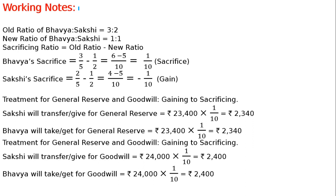The question is: Bhavya and Sakhi are partners in a firm sharing profits and losses in the ratio of 3 to 2. On 31st March of the current year, their balance sheet was given. On the liability side: Investment Fluctuation Fund of 20,000 and General Reserve of 23,400. On the asset side: Furniture, Land and Building, and Investment of 30,000.